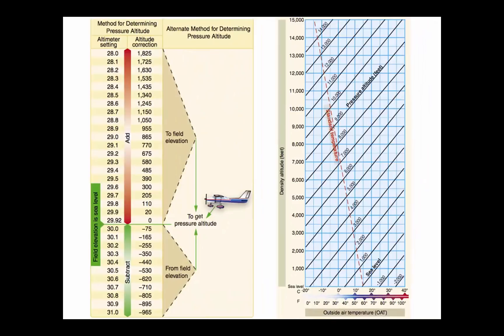The more appropriate term for correlating aerodynamic performance in a non-standard atmosphere is density altitude. The altitude in the standard atmosphere corresponding to a particular value of air density. Density altitude is pressure altitude corrected for non-standard temperature.